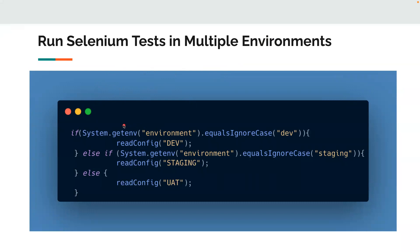We might have a different set of URLs, different set of passwords, different set of usernames. Typically, what a normal automation engineer would do is keep all the configuration related to dev in a particular configuration file, read from that for dev, and have a separate file for staging. By default, they try to run tests in UAT, and they fetch the environment as user input — maybe from Jenkins or Maven system variables — and then read configuration based on that.